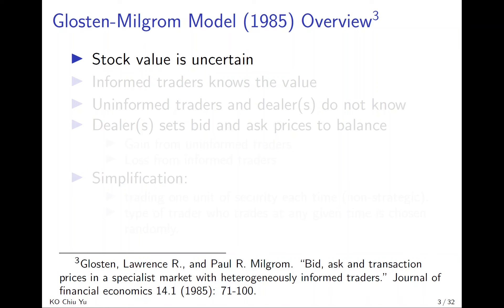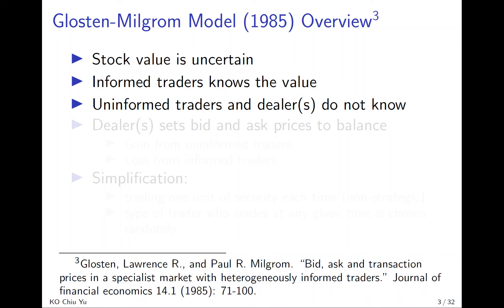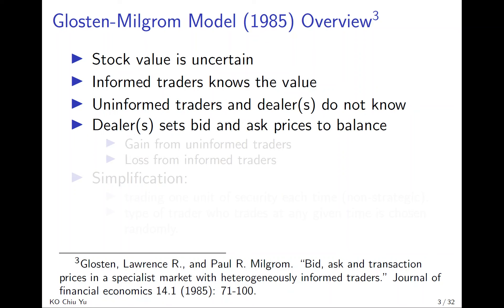Basically, the stock value is uncertain. Informed traders exactly know the true value, but uninformed traders and the dealers do not. That is why the dealer has to set a bid-ask spread — different buying and selling prices — to balance the gains from uninformed traders and the losses to informed traders.